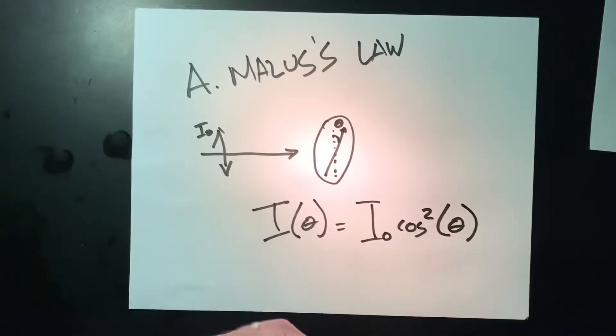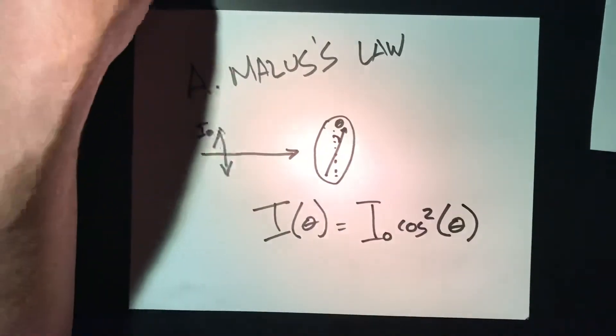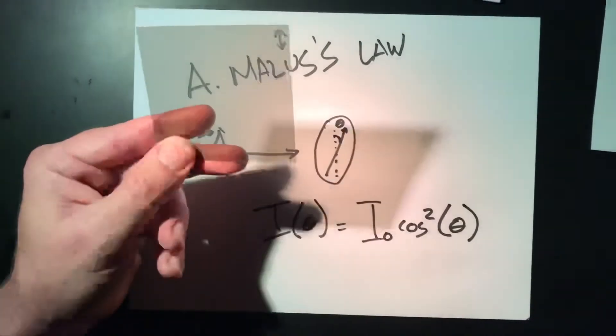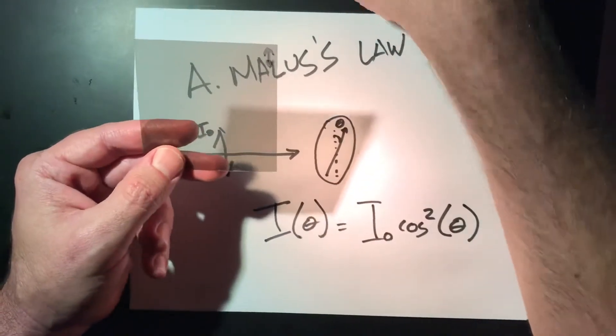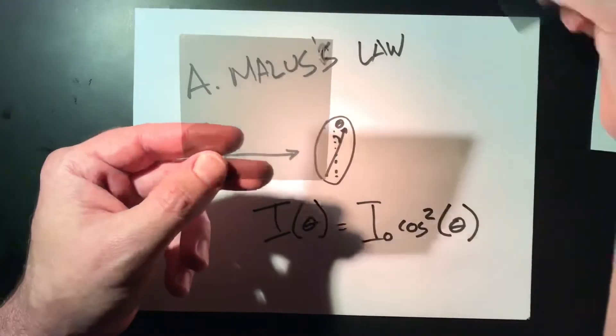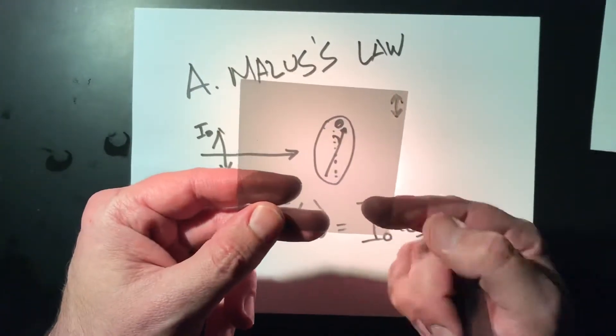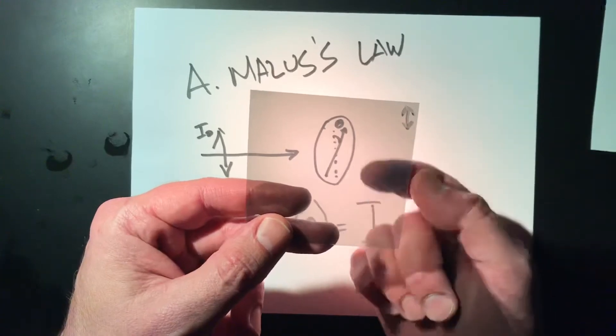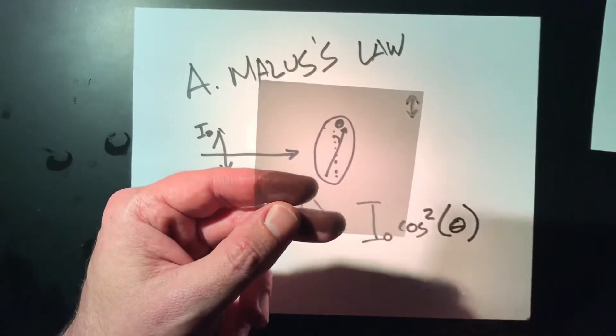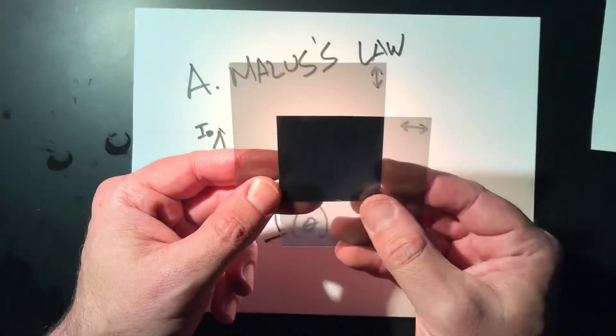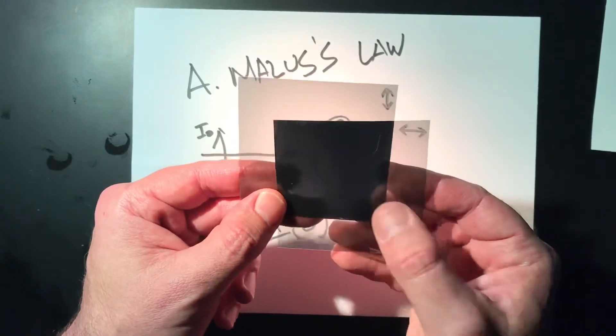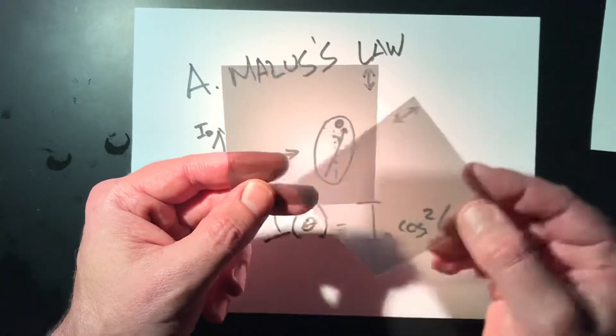So what this means is I have a linear polarizer here, and this filter transmits light that's polarized with the electric field oscillating in this direction. So if I take another linear polarizer and put it across at right angles, then nothing gets through.